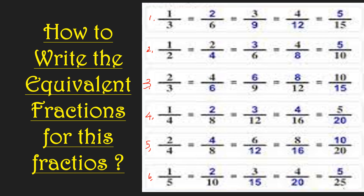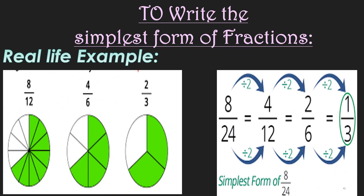Next, how to write the simplest form of fractions. 'Simplest' means short form — the fractions are given in expanded form and we should write the short form. To expand, we multiply (that is the equivalent fraction). For the simplest form, we divide both the numerator and denominator by the same number to get the simplest form.